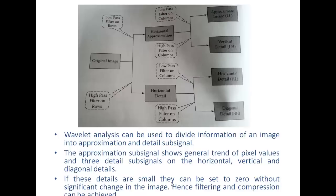So generally, whenever my signal is broken up into sub-signals, I have four images produced: one is the approximate image, and the other three sub-signals show me the horizontal, vertical, and diagonal details. If these details are small, they can be set to zero without significant change in the image. Hence filtering and compression can be achieved using wavelet transforms. If the vertical, horizontal, and diagonal details are negligible, I can just put them to zero without changing the approximate image.